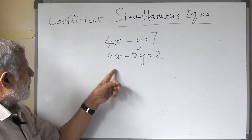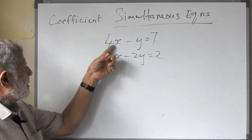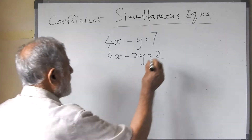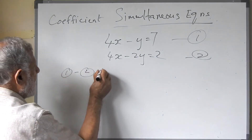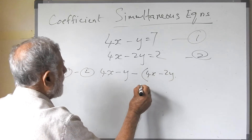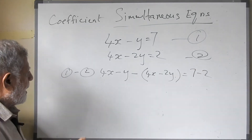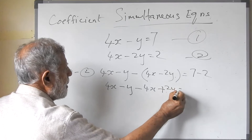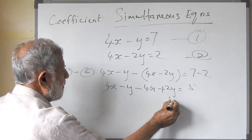Once you discover the unknown with the equal coefficient, we must decide whether to add or subtract. Because 4x is in both equations, when you subtract, it will get cancelled. So we subtract. We call them equation 1 and equation 2. So 1 minus 2 is: 4x minus y minus bracket 4x minus 2y equals 7 minus 2. Removing the brackets: 4x minus y minus 4x plus 2y equals 5. Here 4x minus 4x cancels, and minus y plus 2y equals y.